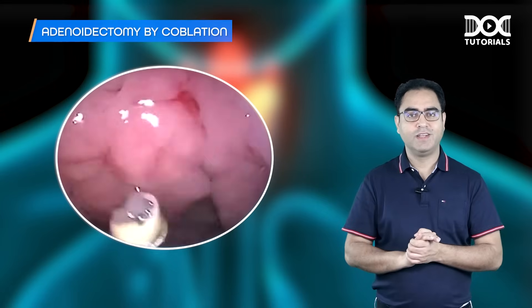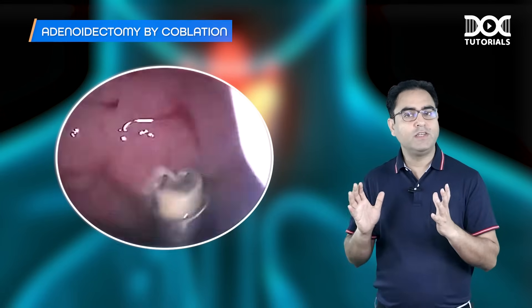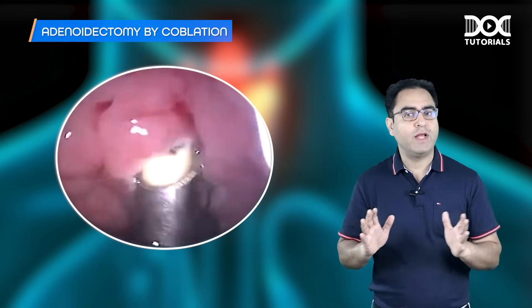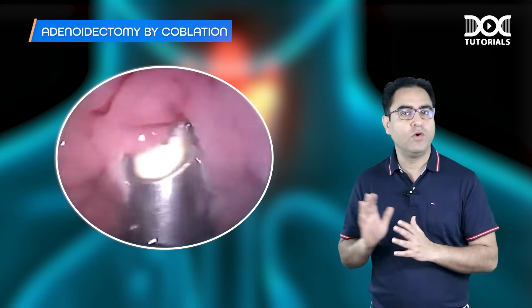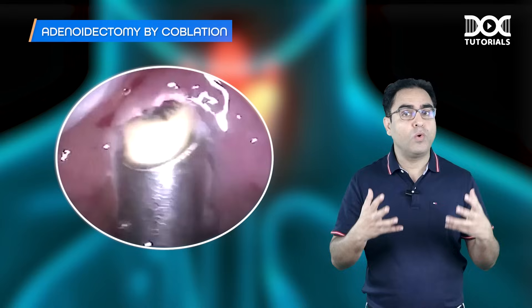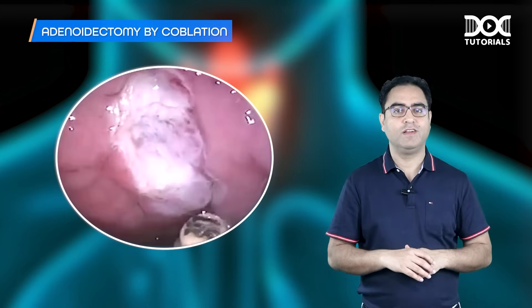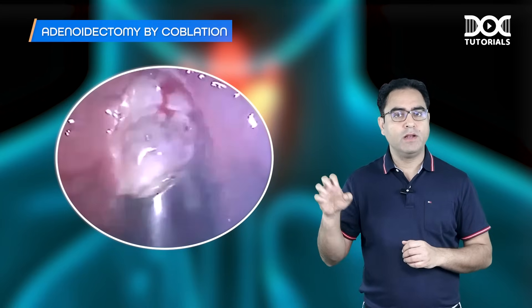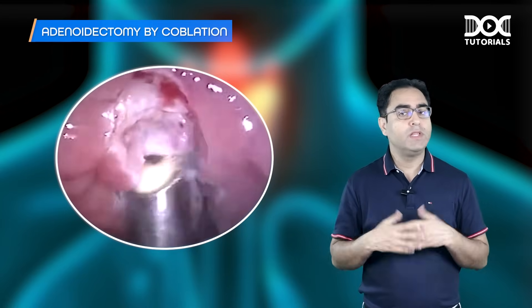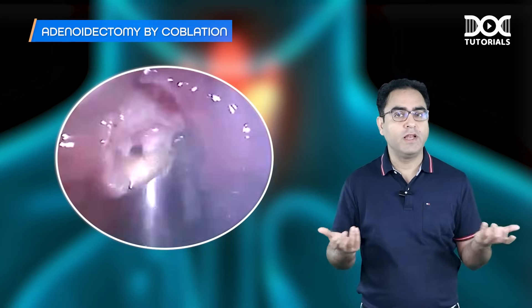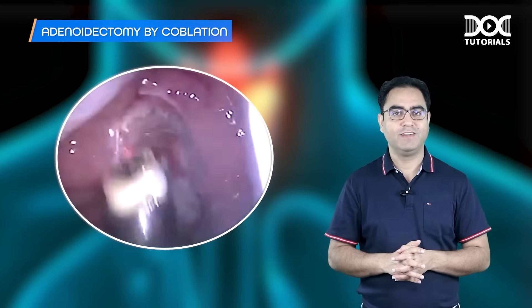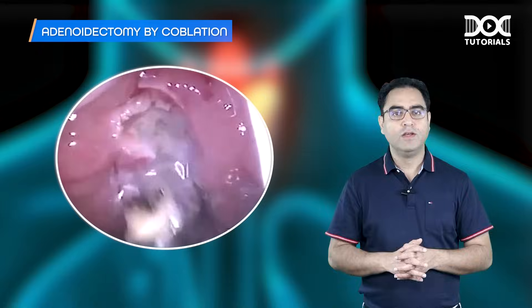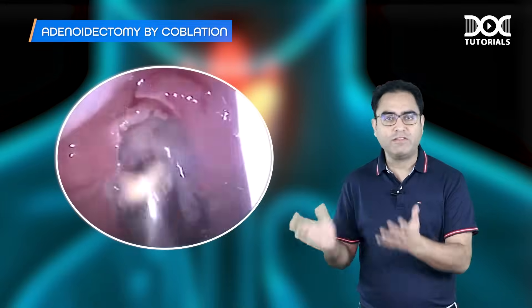Coblation is the best method. It is controlled ablation — it eats away the adenoid without significant bleeding. So it is the best method of surgery.